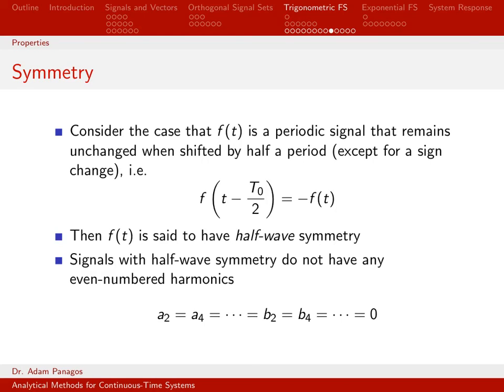One thing about half wave symmetry signals you can show is that they never have any even numbered harmonics. So that means a2, a4, a6, a8, all the way up to infinity, b2, b4, b6, b8, all the way up to infinity. All of the even numbered harmonics have to be equal to zero. So this is just something nice to know sometimes. If you're dealing with a signal that has this symmetry, then you know right away that there's a lot of zeros in these coefficients.